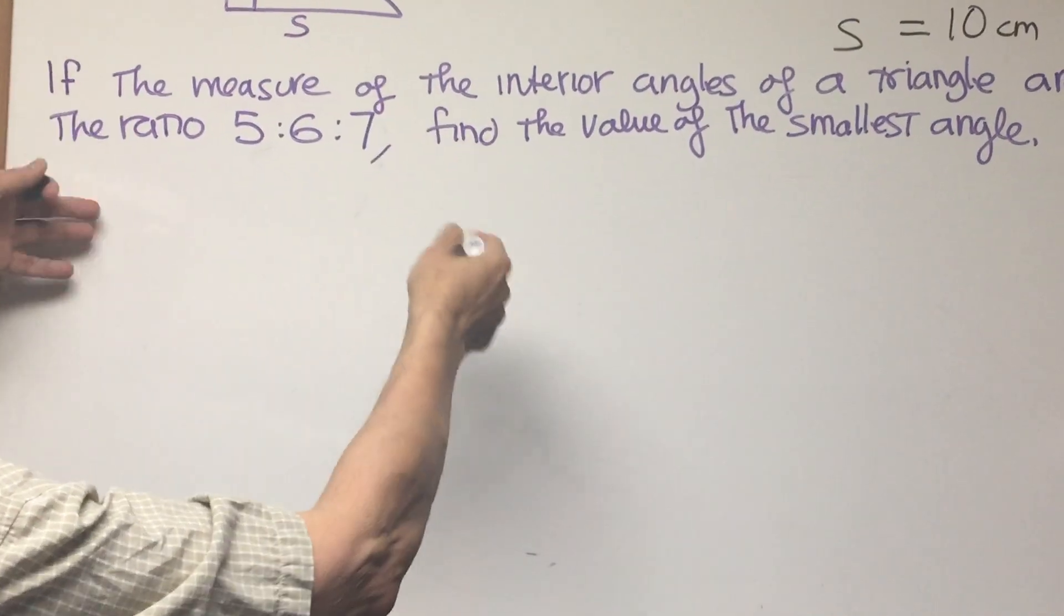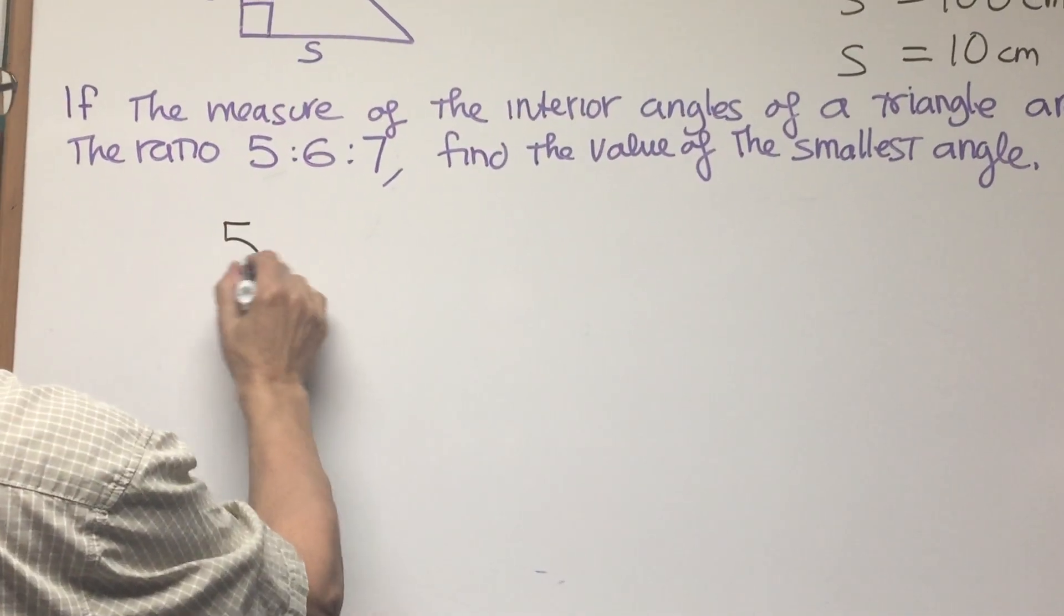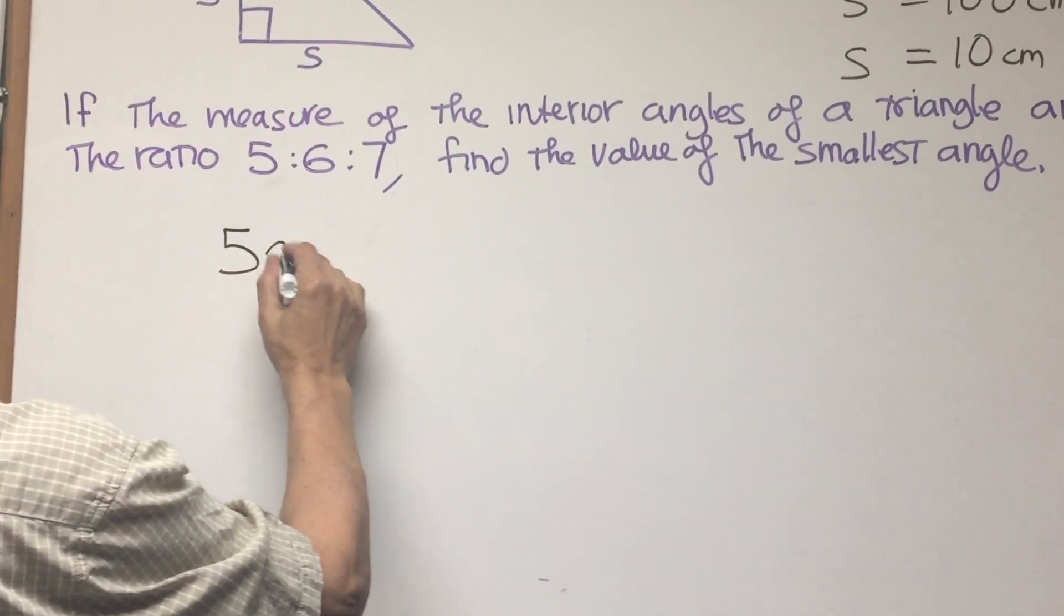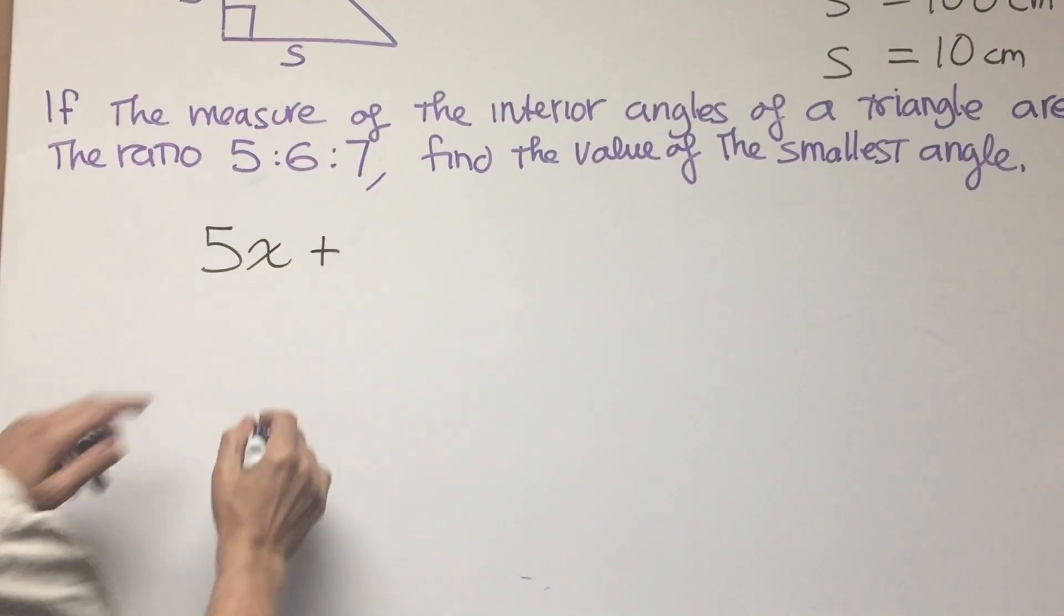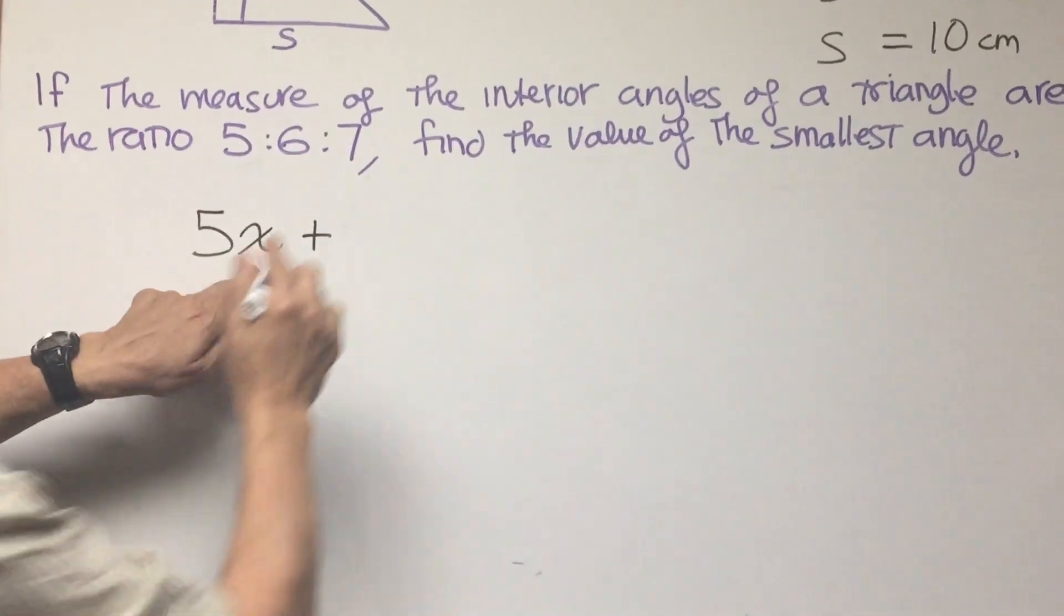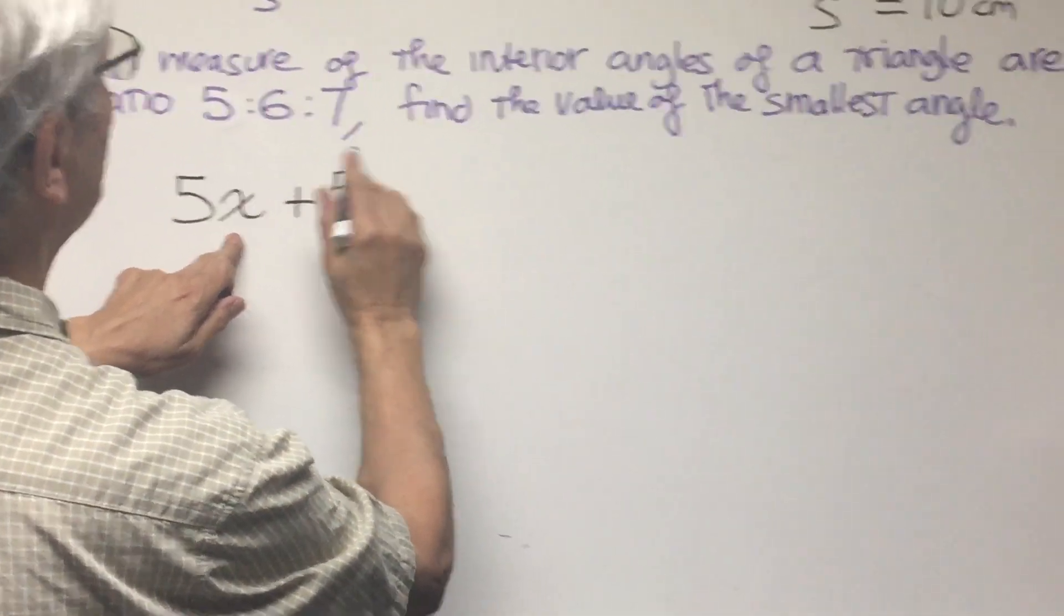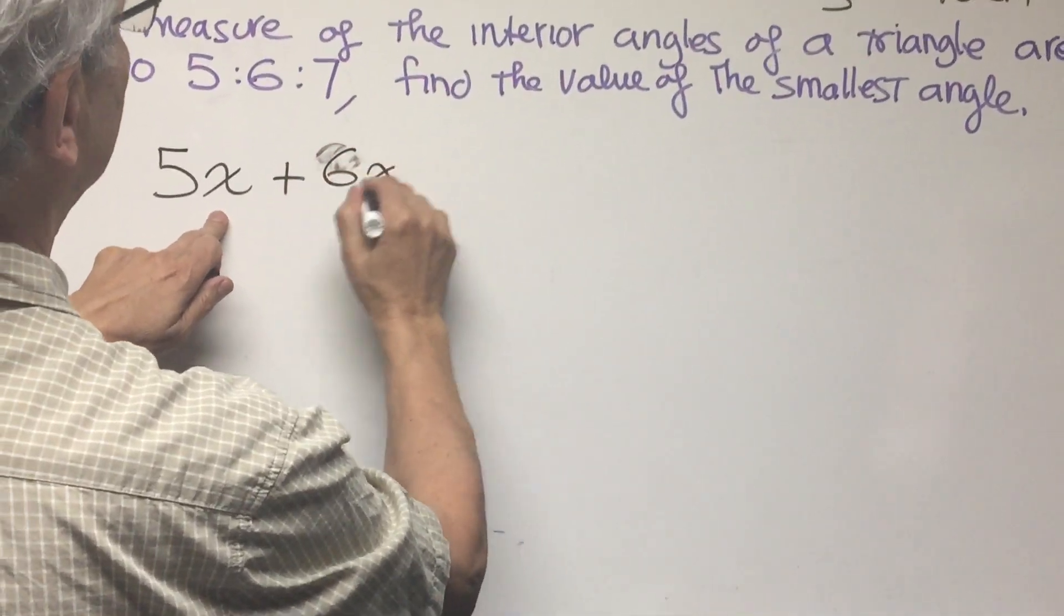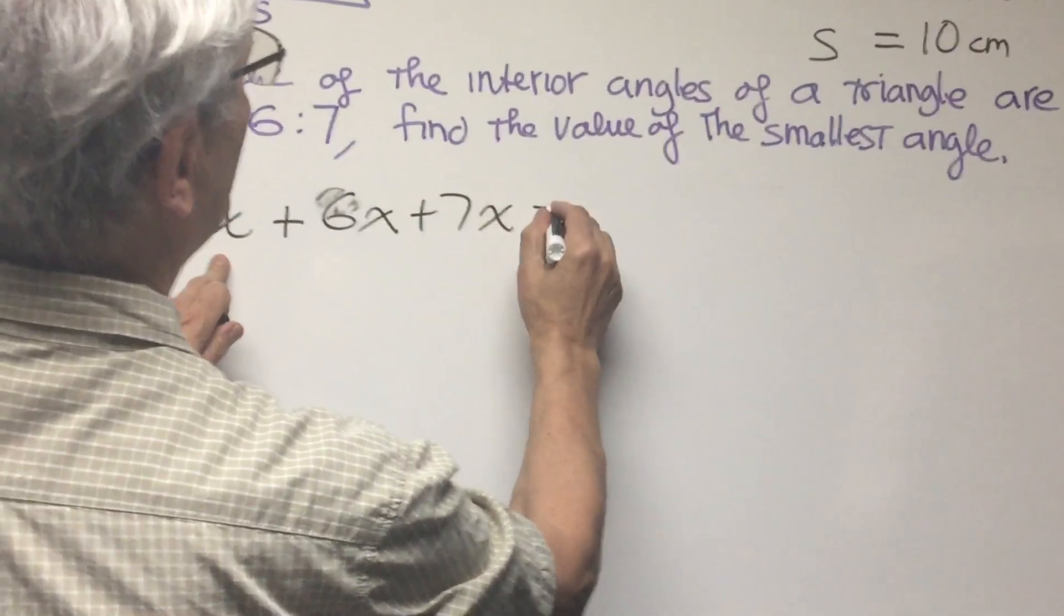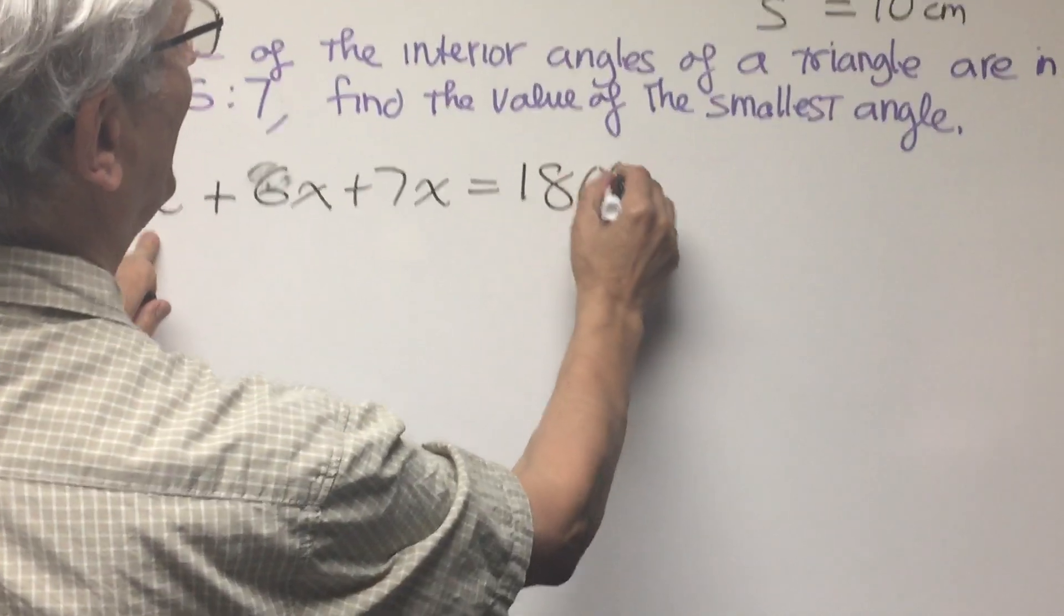Let's let x be the variable of proportion. So we know if the three angles are in the ratio 5:6:7, we know that there's some value x such that 5x plus 6x plus 7x all are going to add up to 180 degrees.